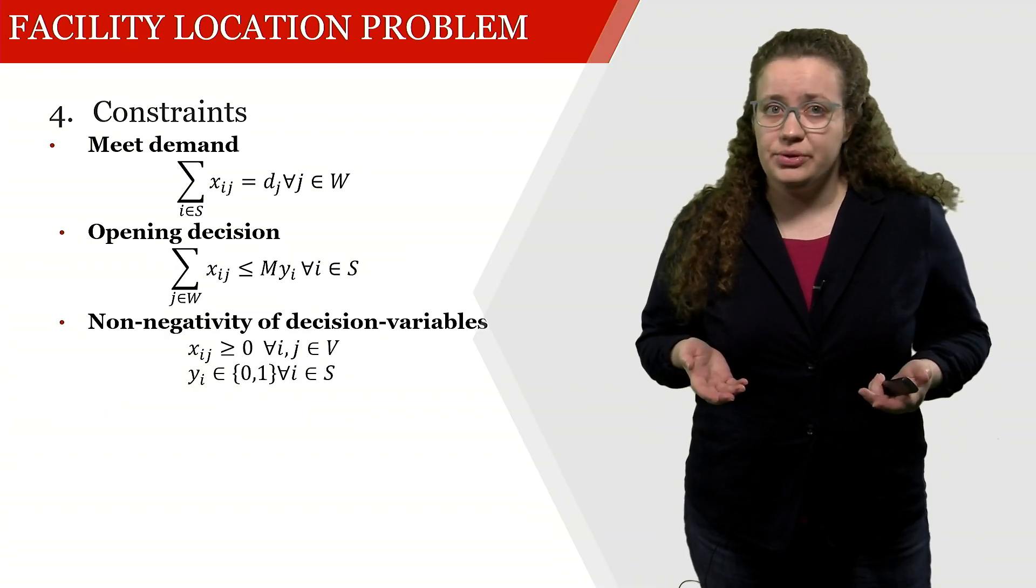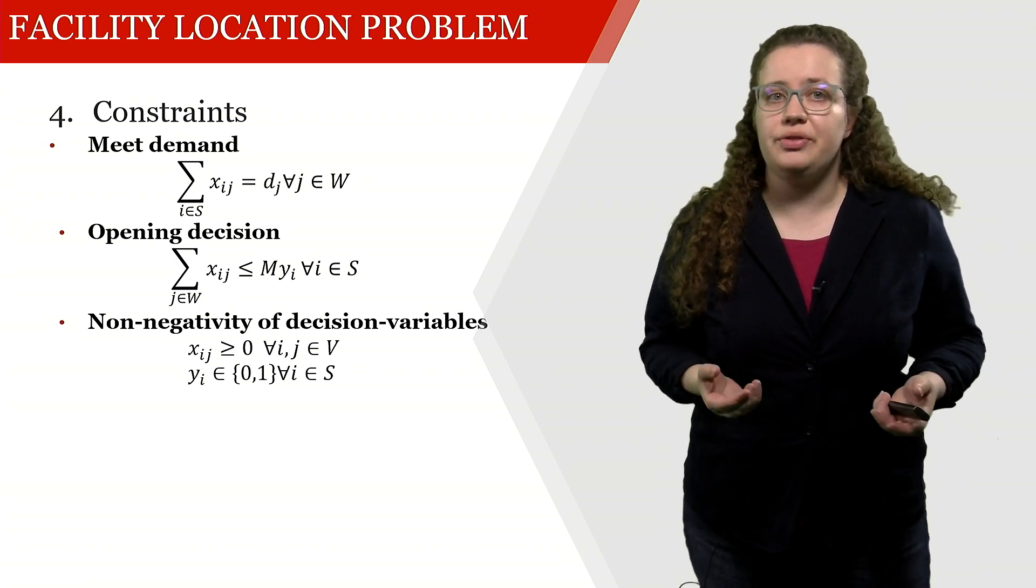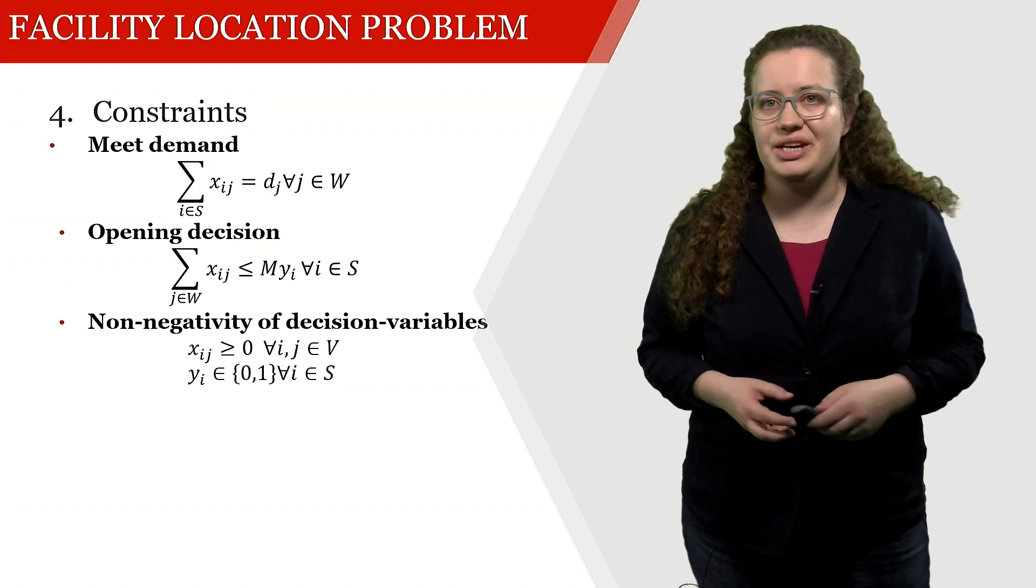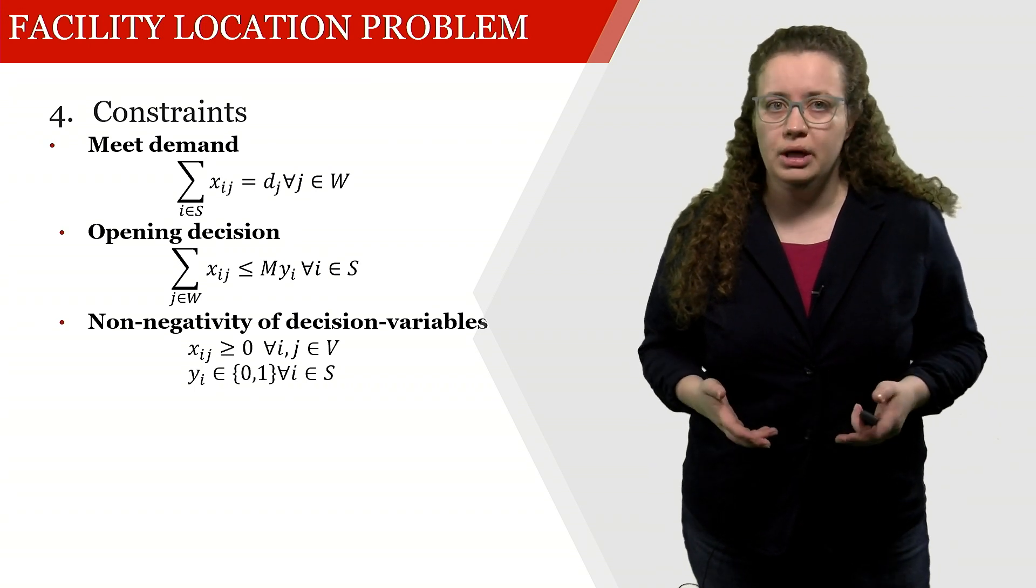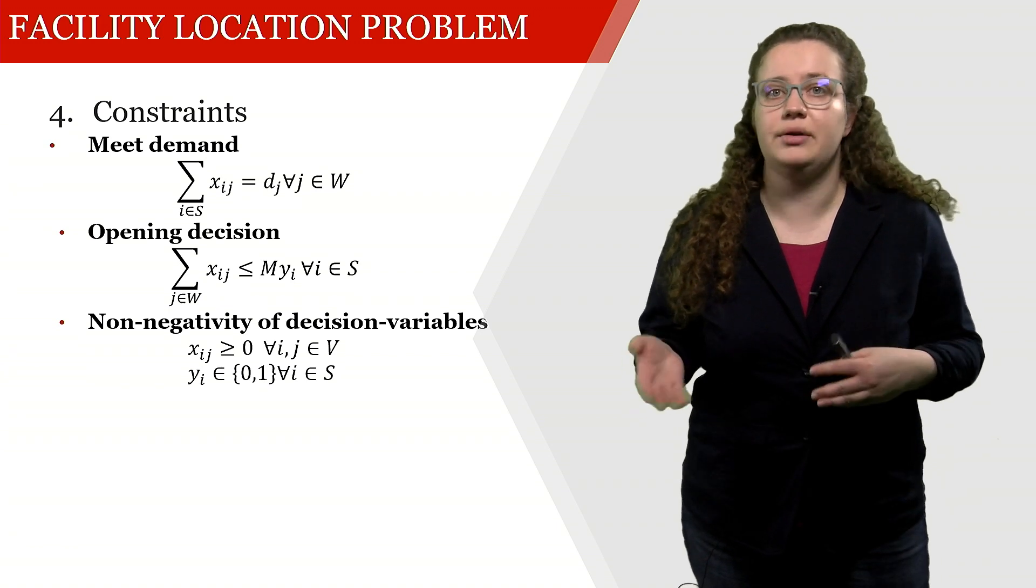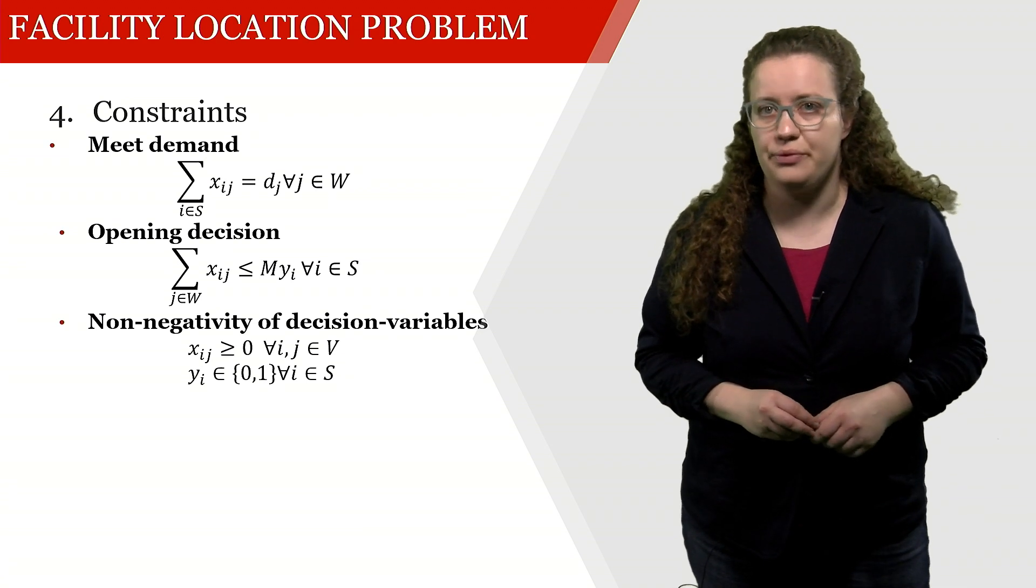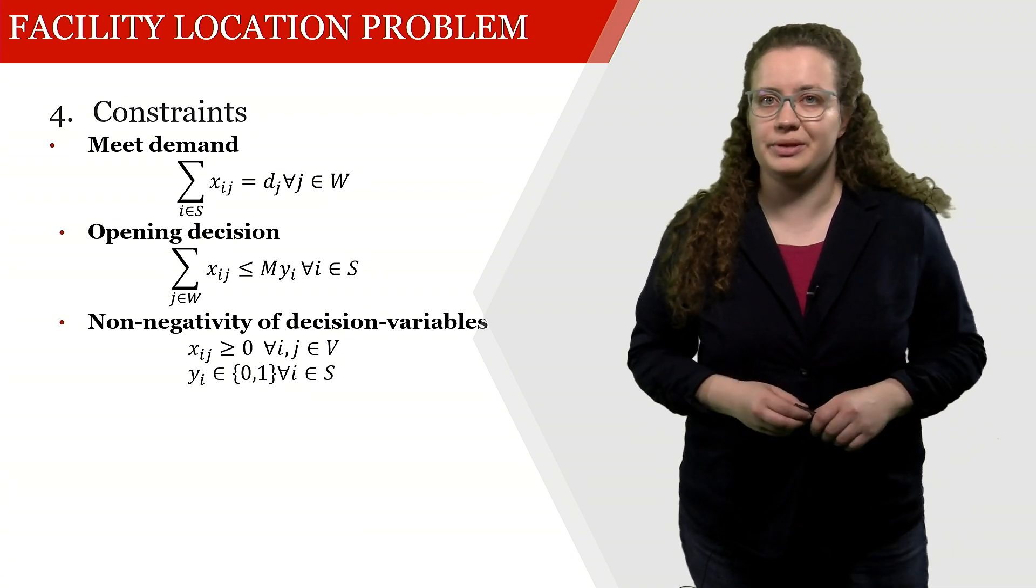And the last set of constraints that we need is the domain restriction variable. We have to make sure that we don't have any negative flow and we have to make sure that the opening decision is a 0 or a 1, so a binary decision, but it's not we're opening something with 0.5 or we're also not opening one sawmill twice.